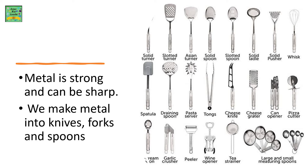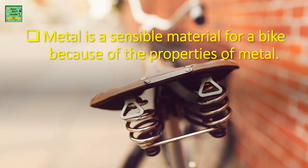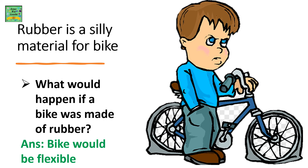Metal is strong and can be sharp. We can make metal into knives, forks, and spoons. Metal is a sensible material for a bike because of the properties of metals. Rubber is a silly material for a bike — what would happen if a bike was made of rubber? The bike would be flexible.